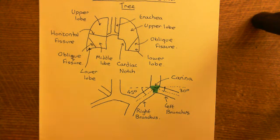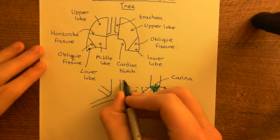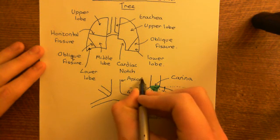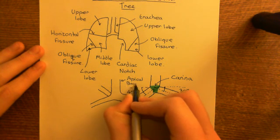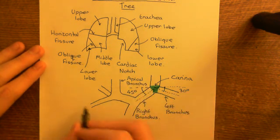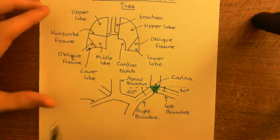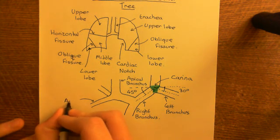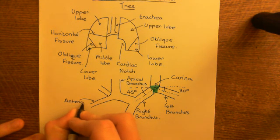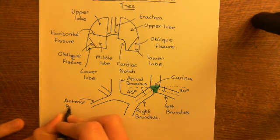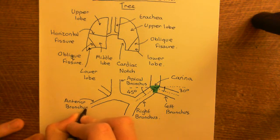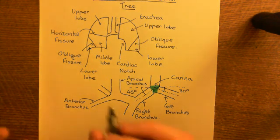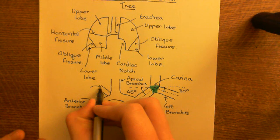Let's give these their names. The one that goes upwards here is called the apical bronchus of the right lung. Then the one that goes forward and comes to the front of the upper lobe is called the anterior bronchus — the anterior bronchus of the right lung. It's important to distinguish whether it's in the right lung or the left lung, because there will be an apical, anterior, and posterior bronchus in the left lung as well.